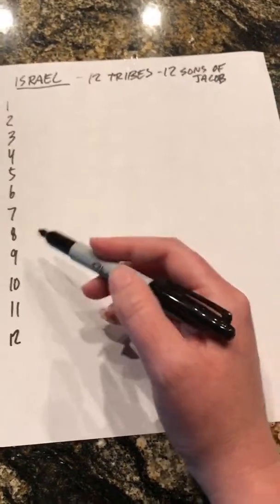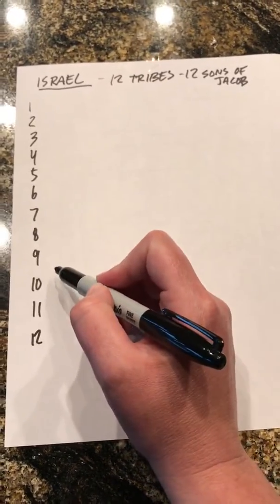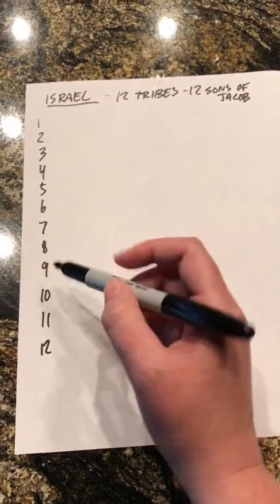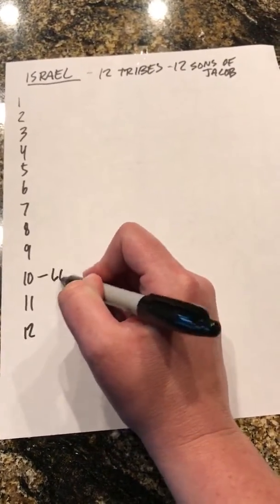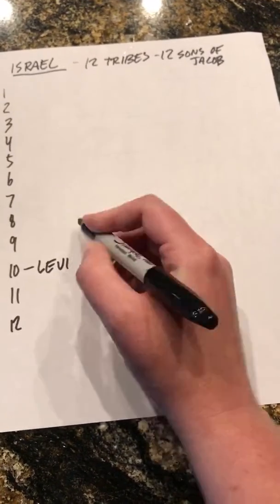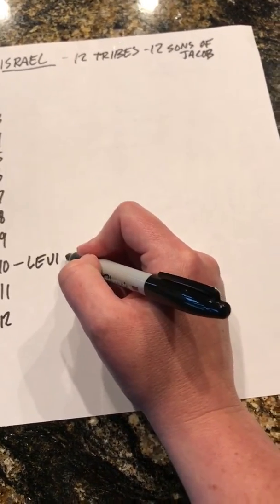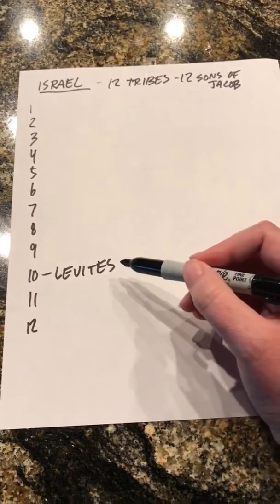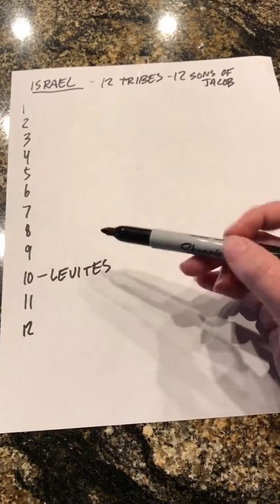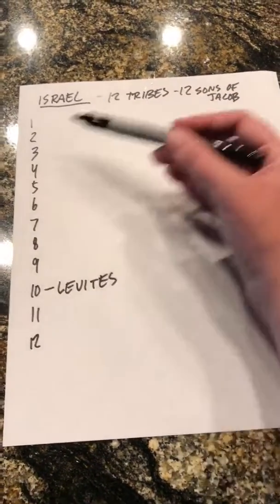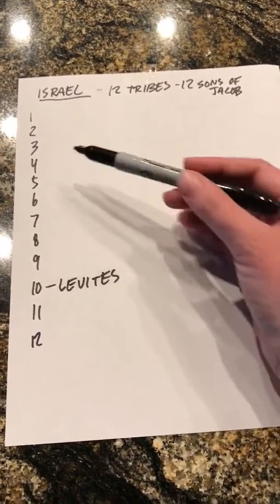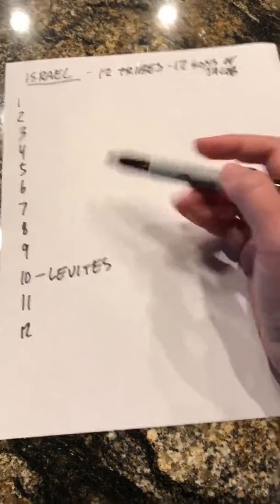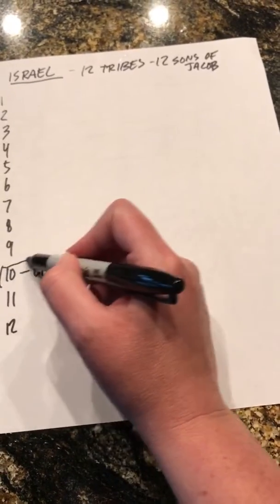You've got the 12 sons, but the only one that didn't really get land — it was divided into 12 pieces — was the Levites, the tribe of Levi. They didn't get a piece of land because they were going to be the tribe of high priests, having roles amongst all the tribes. All of the tribes were told they needed to share everything with the Levites, so the Levites were dispersed amongst all the different tribes and didn't really get a plot of land.